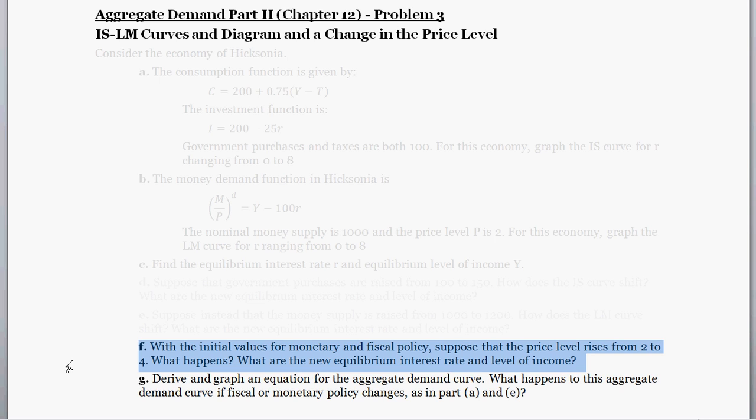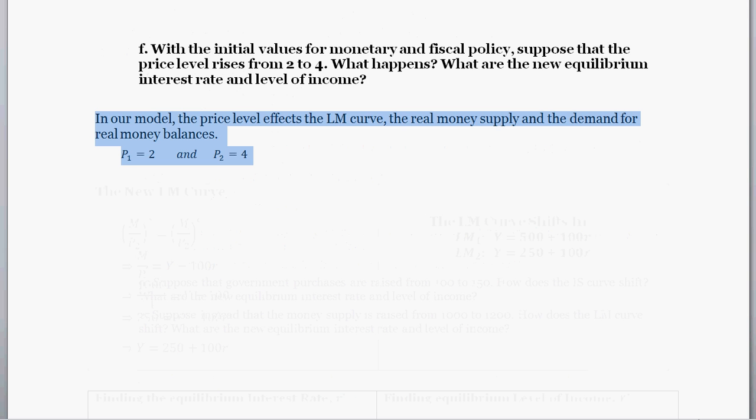Using the IS-LM framework, with the initial values for monetary and fiscal policy, suppose that the price level rises from 2 to 4. What happens, and what are the new equilibrium interest rates and level of income? So in the initial setup of our model, we had prices. So I'm going to call that P sub 1 equal to 2. That was the initial price level.